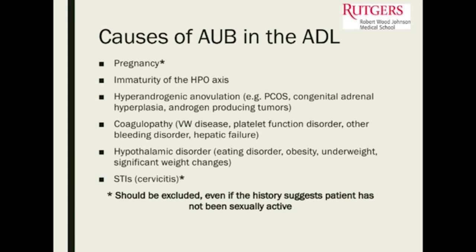Always think about pregnancy when a female comes in with abnormal uterine bleeding. Think about maturity of the HPO axis, hyperandrogenic causes of anovulation such as PCOS, congenital adrenal hyperplasia, androgen-producing tumors. When young girls come in with excessive bleeding, think about coagulopathy and bleeding disorders. Think about hypothalamic disorders — eating disorders, obesity, being underweight, or significant weight variations can also lead to abnormal cycles. And sometimes sexually transmitted infections or cervicitis may present with abnormal uterine bleeding.